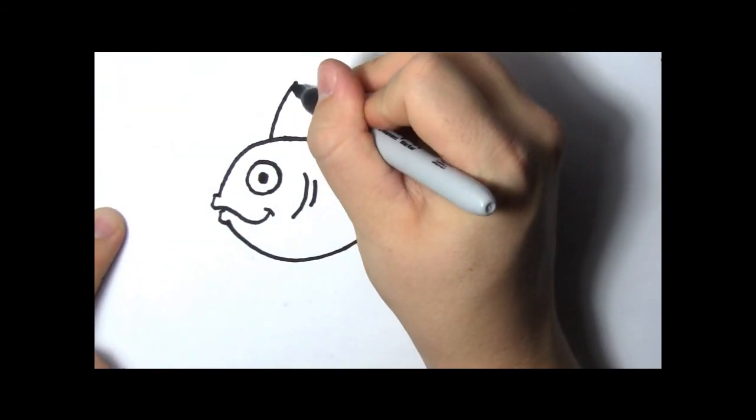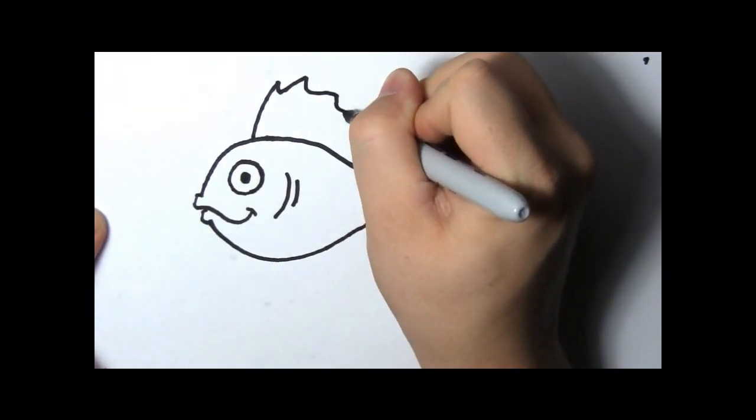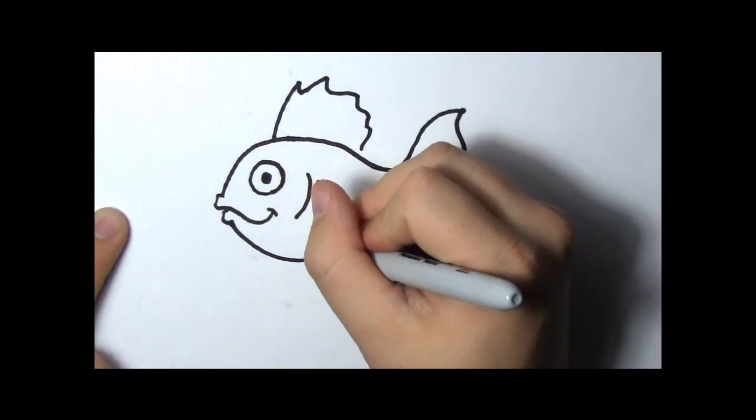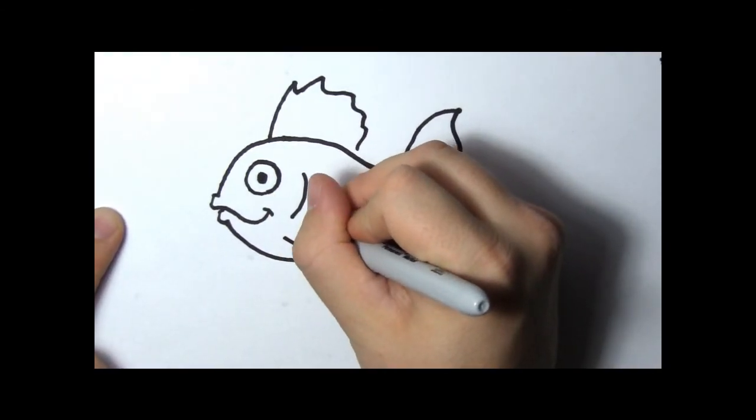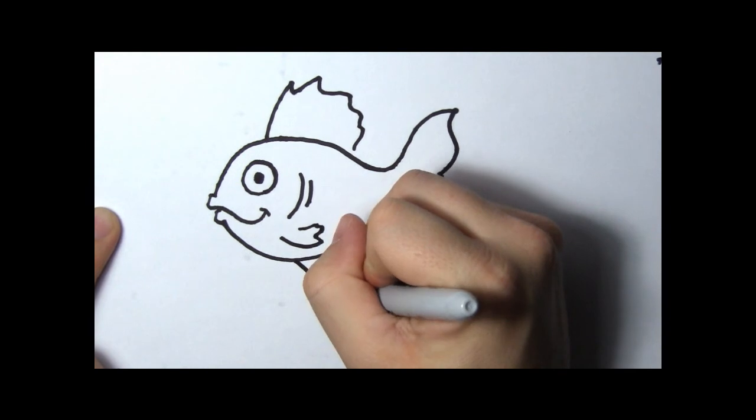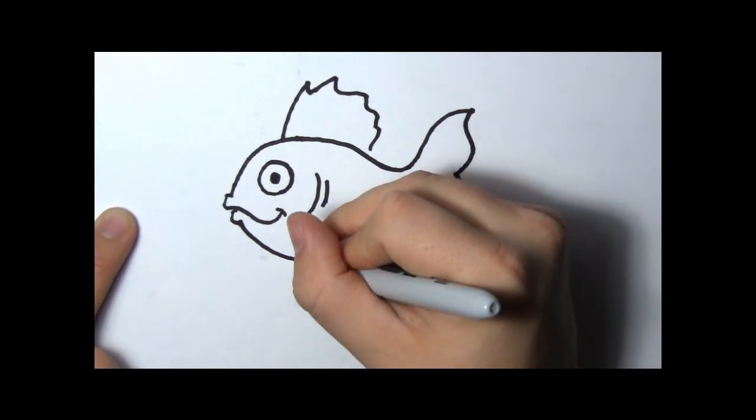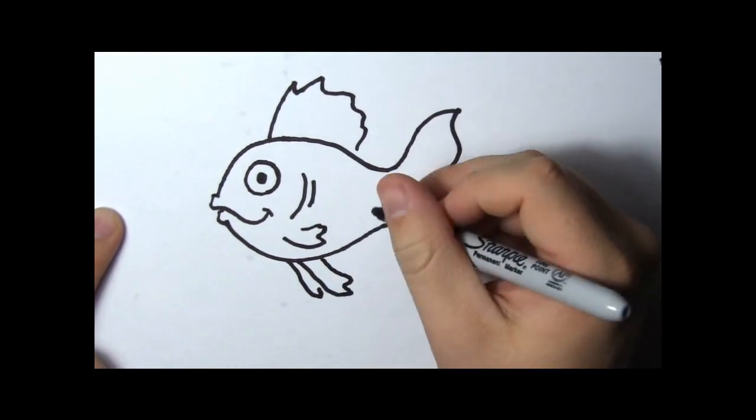They have lots of different fins, one on their top, one on their sides, and other ones on their bottom. These help them swim around the water.